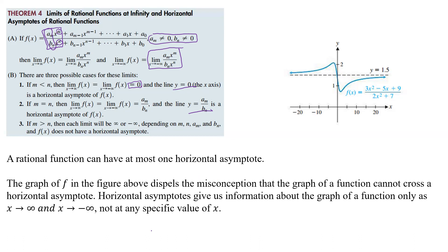The graph in the figure above dispels the misconception that a function cannot cross its horizontal asymptote — it does cross the horizontal asymptote. What happens is the graph goes up, crosses, and then approaches the horizontal asymptote from the top. You could also come down and approach it from the bottom. So horizontal asymptotes tell us the end behavior, not a hard boundary.